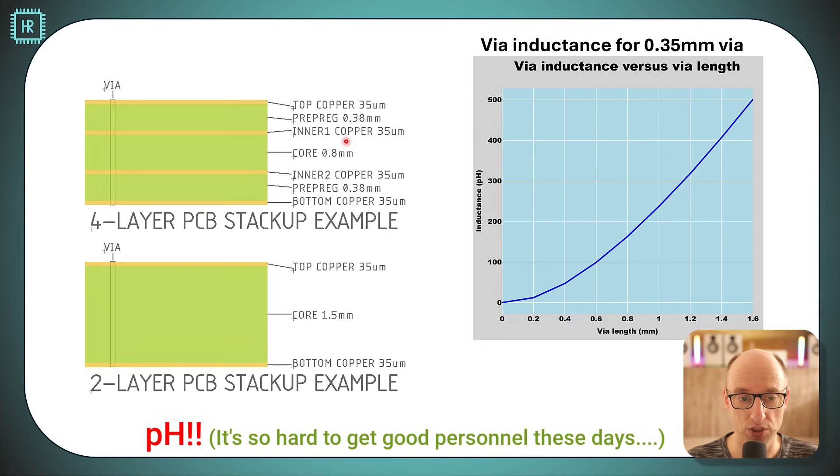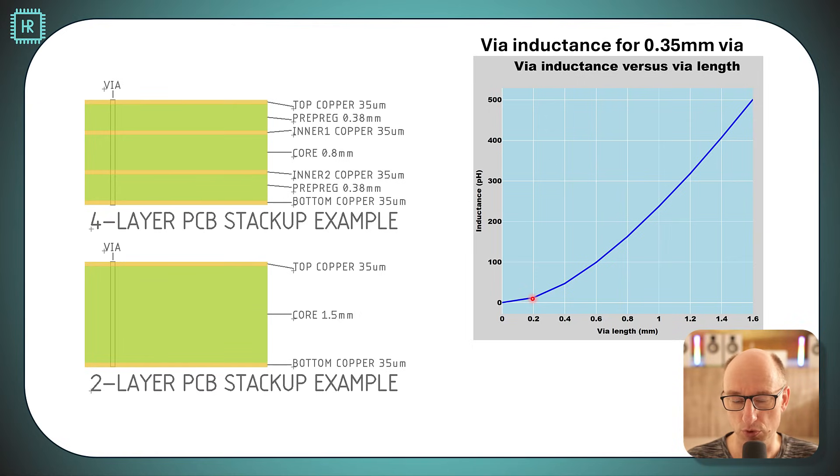The boards I'm using have a prepreg thickness of 0.19 millimeters so that gets down to I think 12 picohenries. So you see an incredible difference in VIA inductance between a four layer board and a two layer board. It's 12 versus 500 and that's going to make a huge difference in the next measurements.